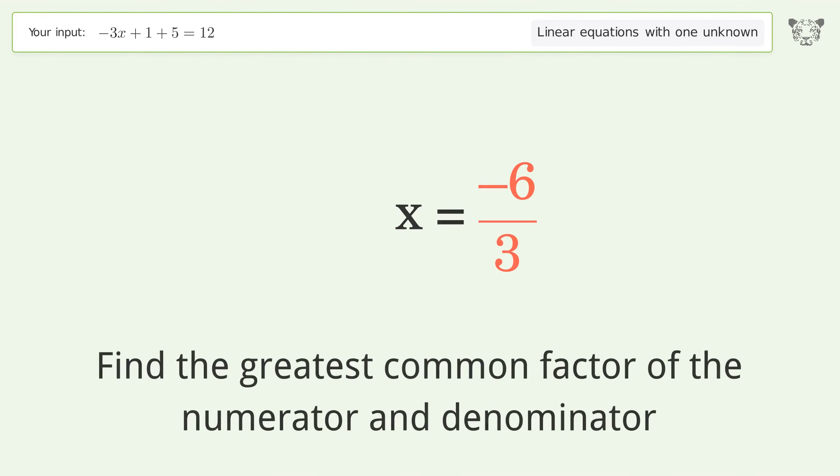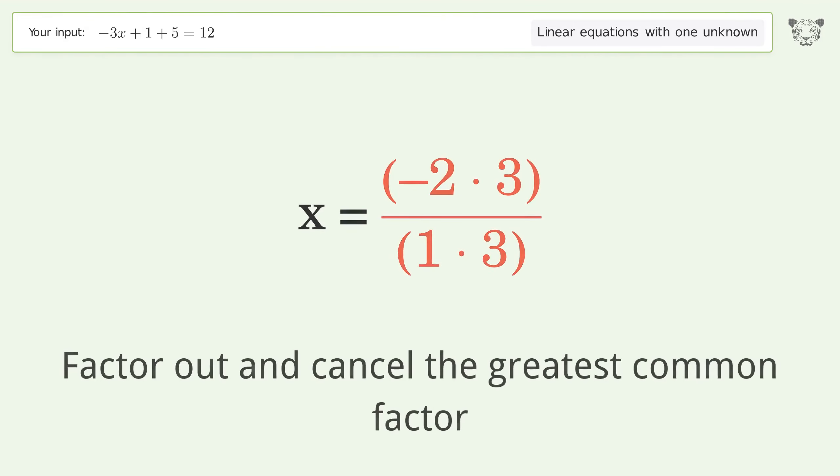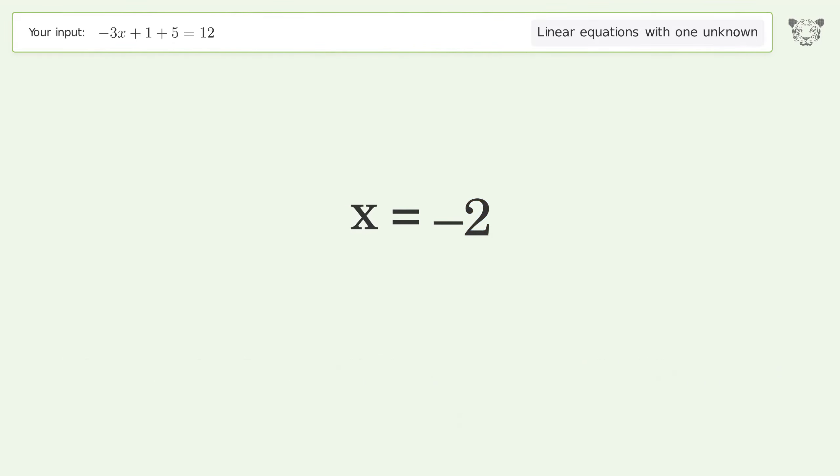Find the greatest common factor of the numerator and denominator. Factor out and cancel the greatest common factor. And so the final result is x equals negative 2.